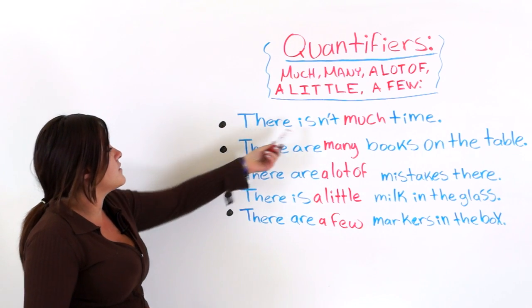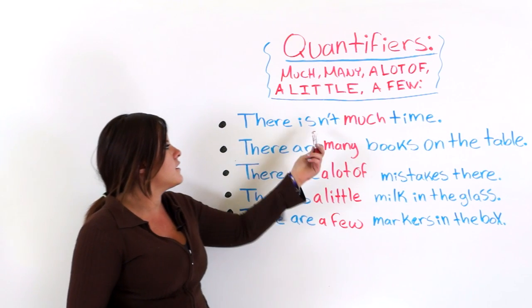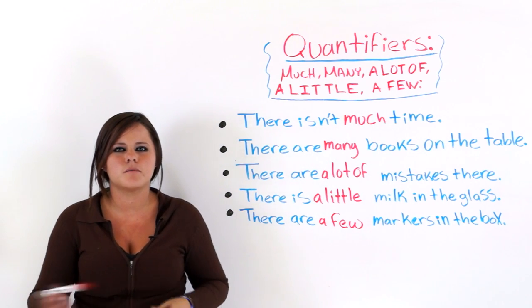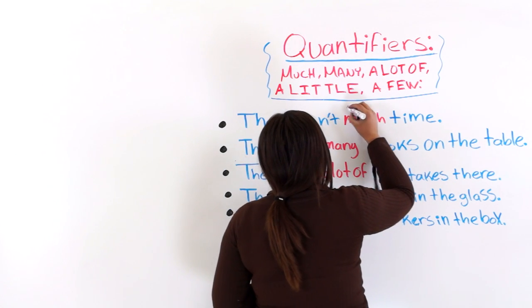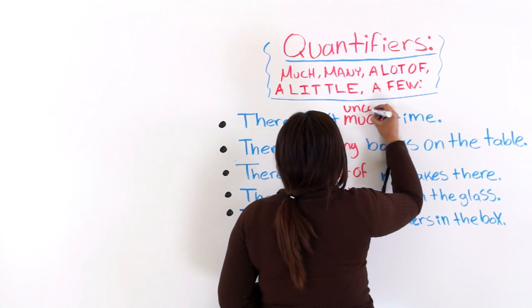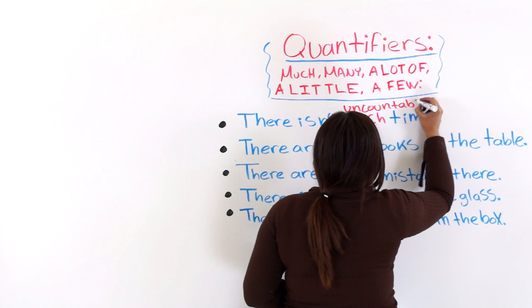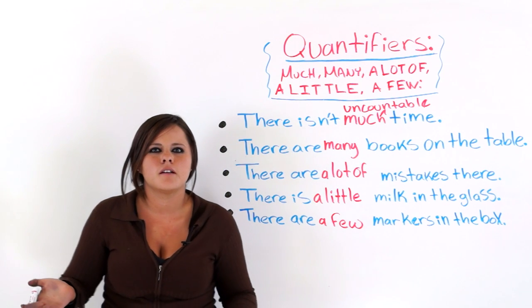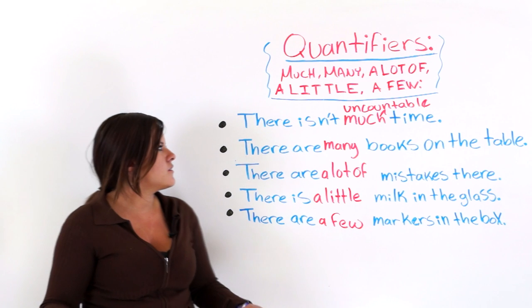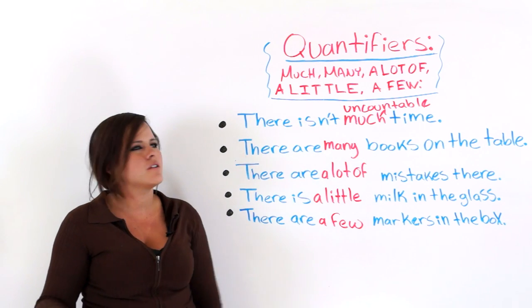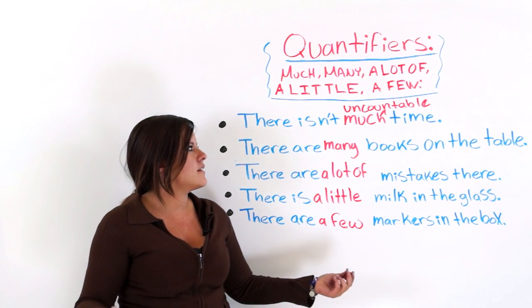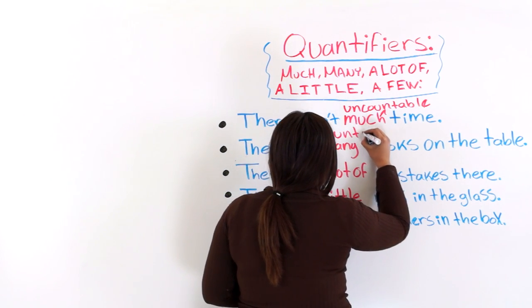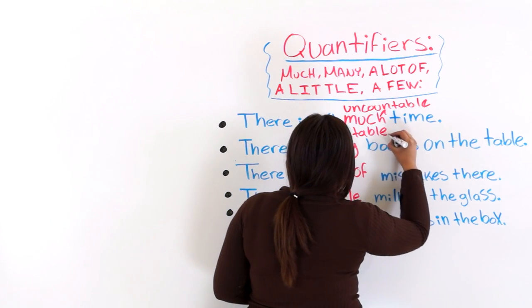First example: there isn't much time. Much is for something that you can't count — uncountable. You can't say 'there aren't many time' because many is for countable things. But if you said hours, that would be countable — you could say 'there aren't many hours.'